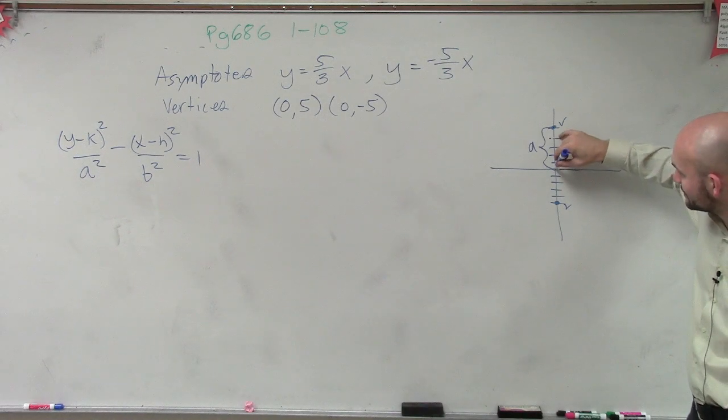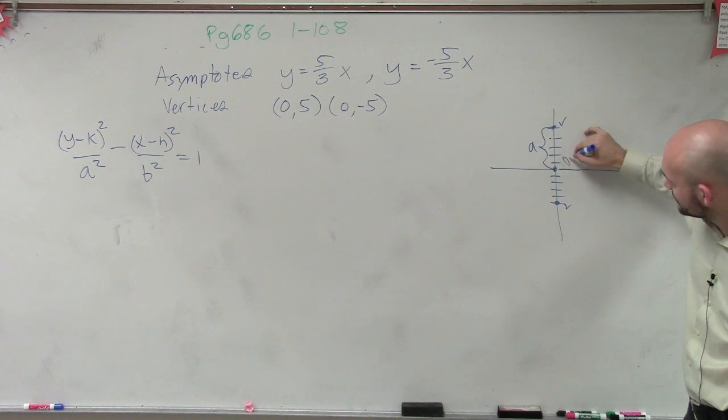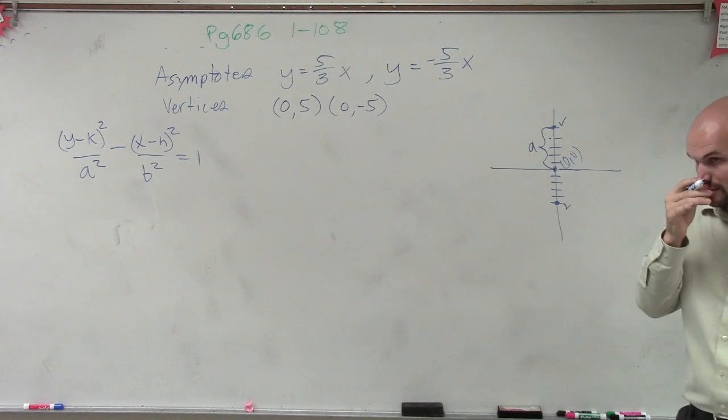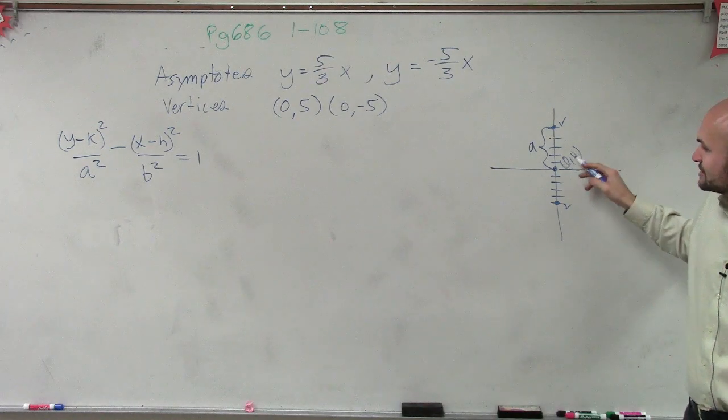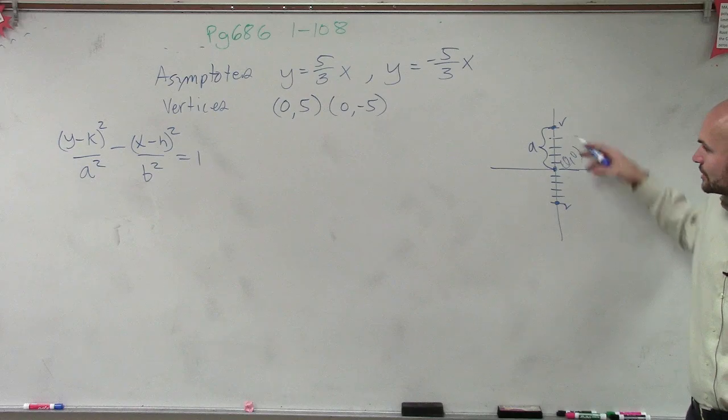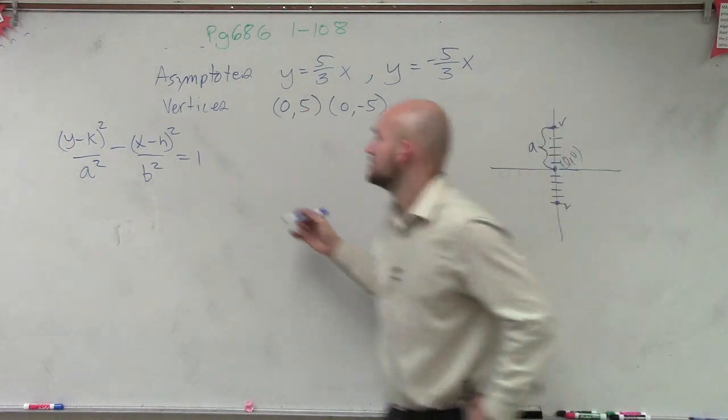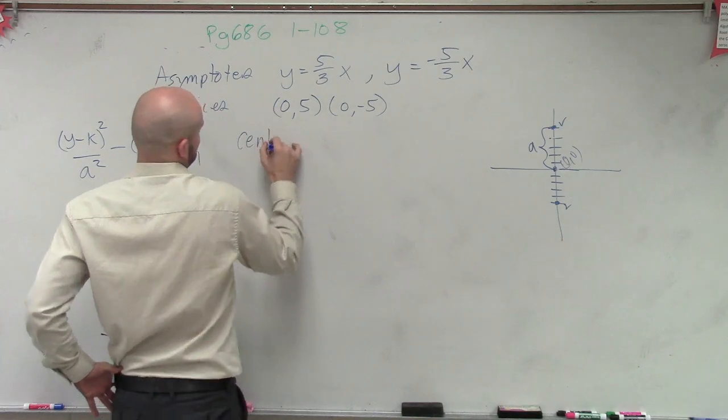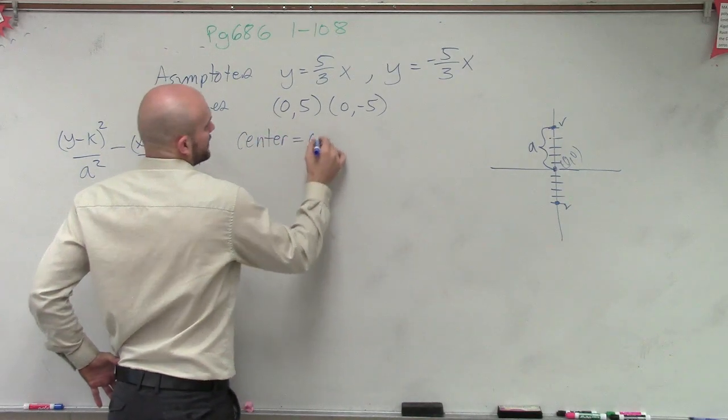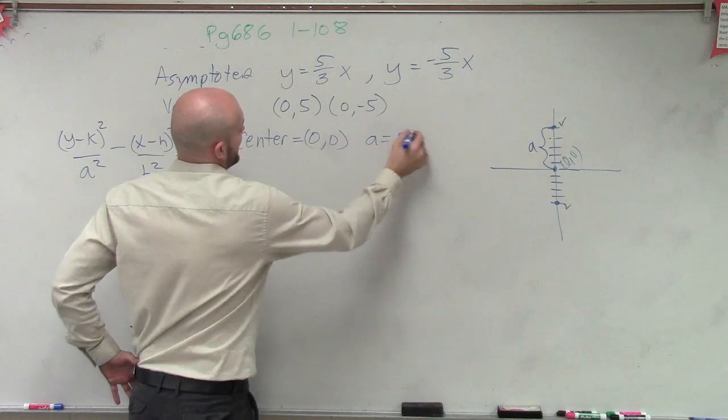the center is 0, 0. And since our center is 0, 0, we know our distance a has to equal 5. So now I can say the center equals 0, 0, and a equals 5. So the only thing left to do now is figure out what b squared is.